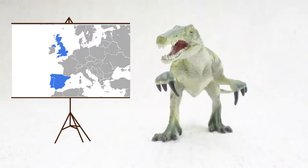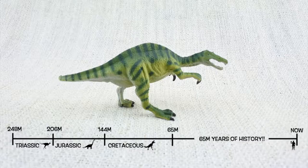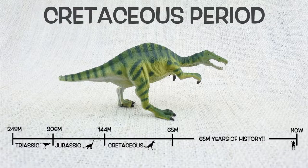Baryonyx was found in Europe. They lived about 125 million years ago in the early Cretaceous period.